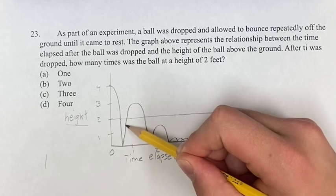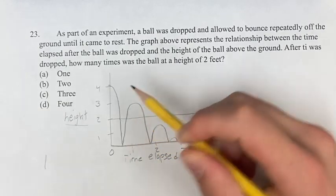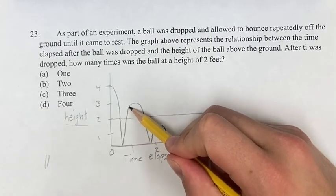And then it goes back up, and then on its way up it crosses two again, so we have another, and then it goes up.